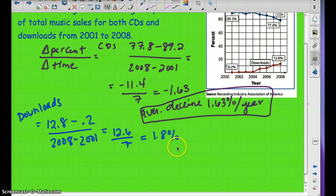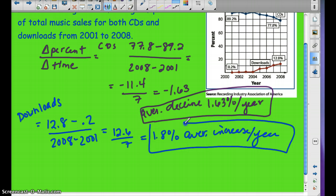Go ahead and do the downloads. So this is what I got for the downloads, 1.8%. And that will be an increase. So it'll be an average increase per year. So that's how you'd find the average. You take the lowest to the highest, or highest to the lowest. Make sure it's the same on top and bottom, however you want to do it.